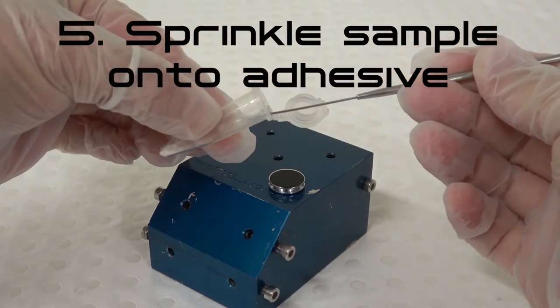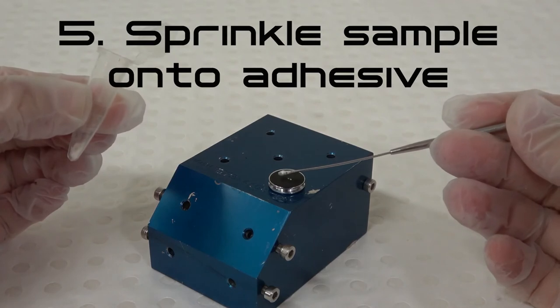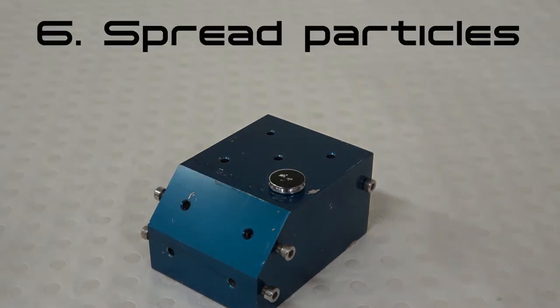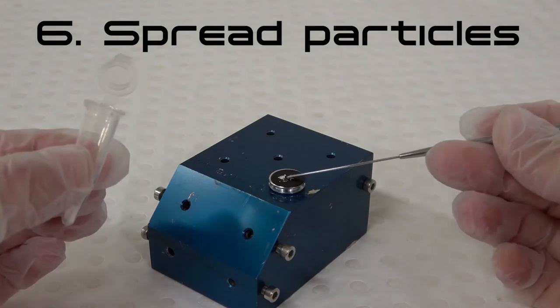Step 5: Using a clean small spatula, sprinkle a very small amount of the powdered sample onto the adhesive. Step 6: Gently spread the particles across the adhesive using the back of the spatula.